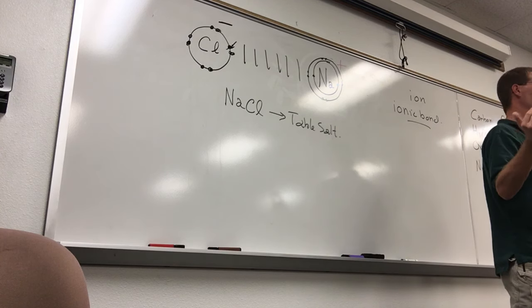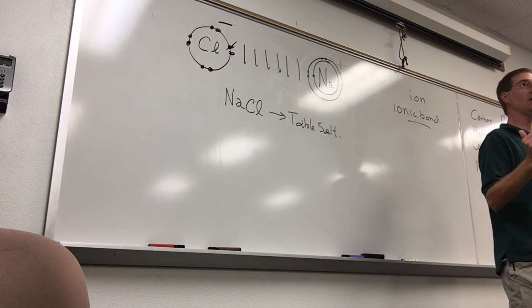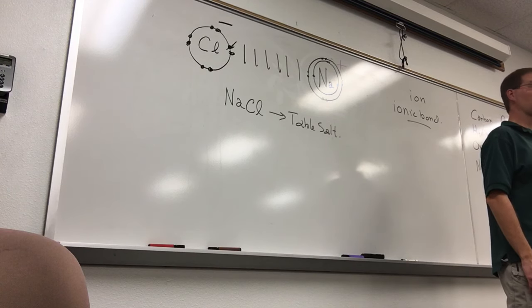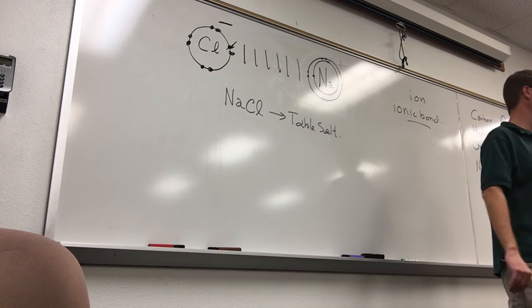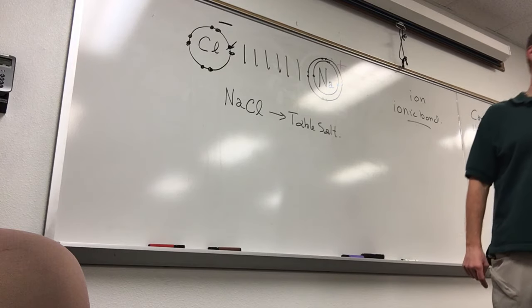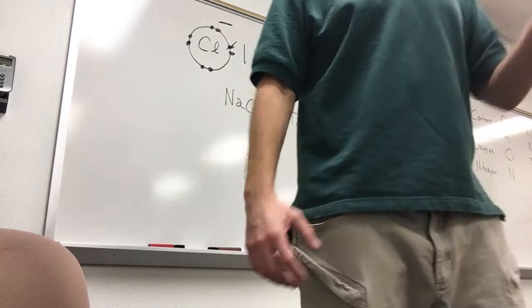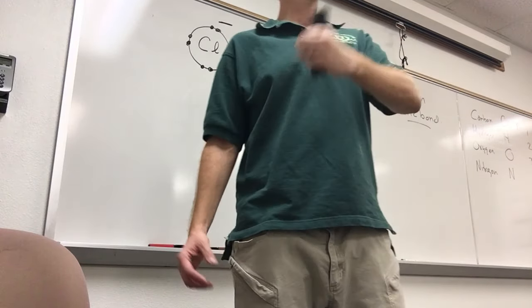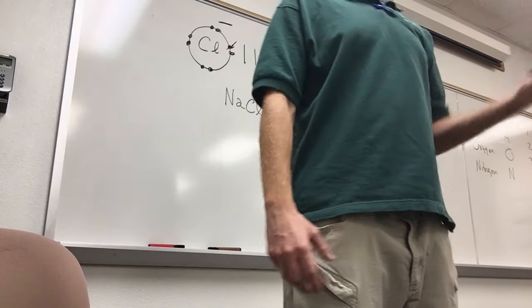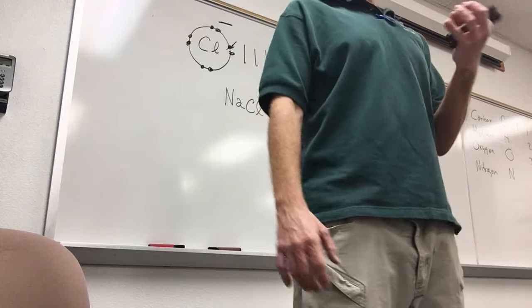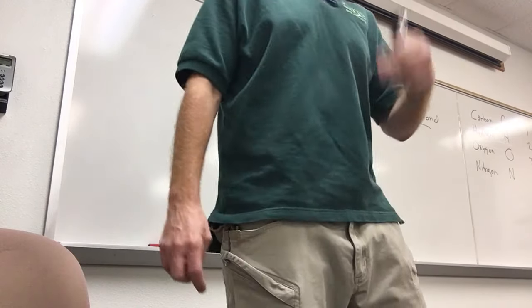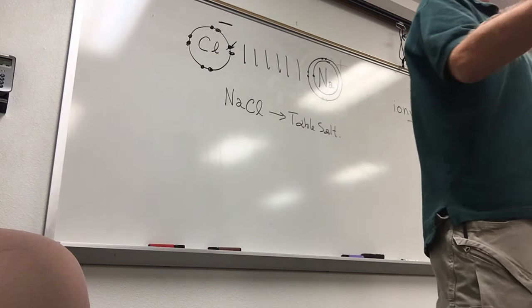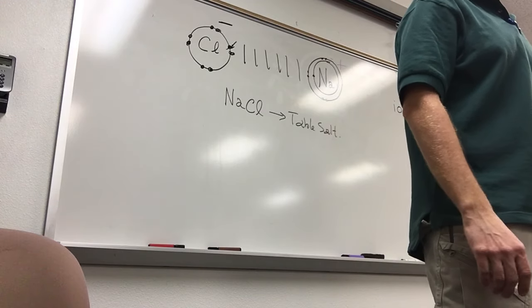The further you get to the right on the periodic table, the more non-metals want to grab an electron — until you reach the noble gases where the valence shell is already full. Fluorine is highly reactive and really wants an electron. Chlorine really wants one too. Oxygen wants one, just not as much as fluorine. Nitrogen wants one, but not quite as much as oxygen. Carbon can kind of go either way. The further left you go, the more likely an atom is to want to give up electrons to meet its octet rule.